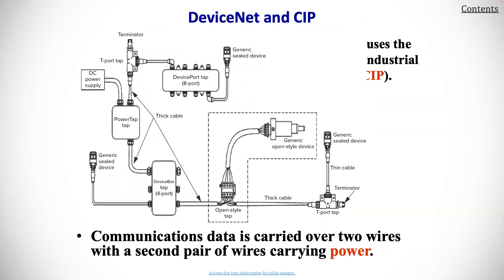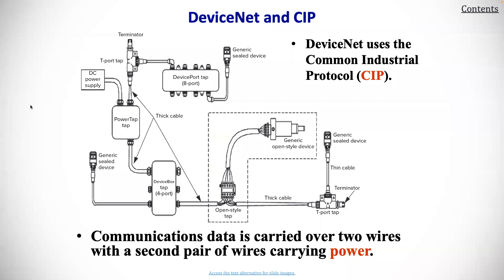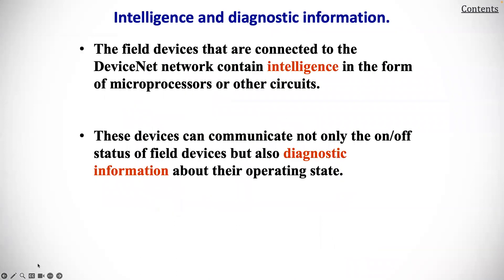You can also have DeviceNet and CIP. CIP stands for Common Industrial Protocol. Communication data is carried over two wires with a second pair of wires carrying power. Field devices connected to the device network contain intelligence in the form of microprocessors or other circuits, and can communicate not only on-off status but also diagnostic information about the operating state.